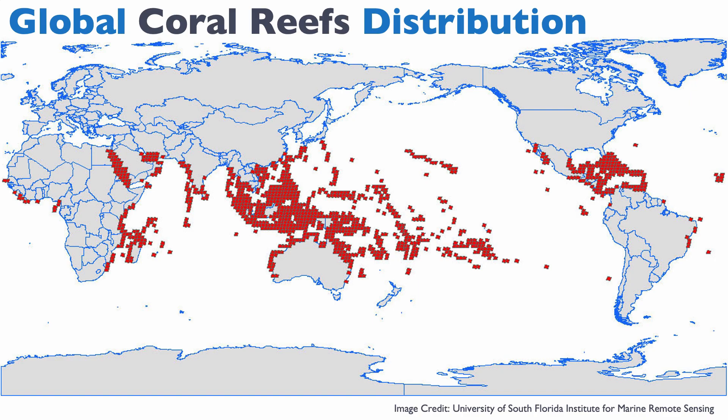So let's look at the distribution of the reefs in terms of latitude. Here you have a global reef distribution map, and the reefs are shown in red. And you can see something striking. All the reefs are within 30 degrees of latitude away from the equator. So 30 degrees north to 30 degrees south, we have reefs. Beyond this, we do not have reefs. So there's a strong control of latitude on the reefs.